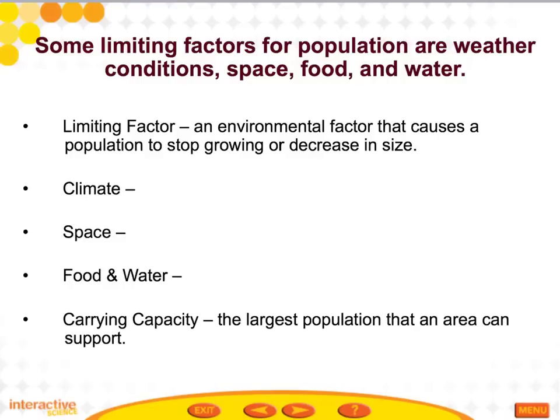The first limiting factor is climate. If weather conditions in an organism's habitat change drastically, they won't be able to survive. Big floods, tornadoes in the midwest, or hurricanes in the east can make an organism unable to grow its population. Not all organisms have the same limiting factors — a rain forest plant requires much more water than a cactus, and a trout requires higher oxygen levels than a catfish.